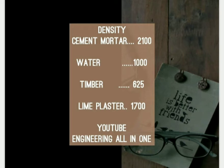Timber has a density of 665 kg per cubic meter, while lime plaster possesses a density of 1700 kg per cubic meter.